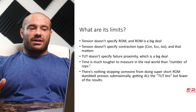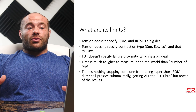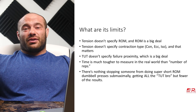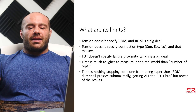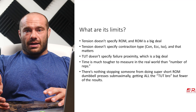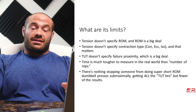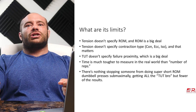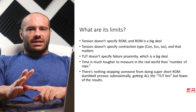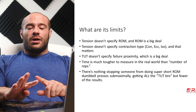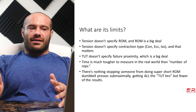The second point is that tension doesn't specify contraction type — concentric, eccentric, or isometric. Isometric only really kind of sucks for growth. And range of motion matters: the best growth comes from going all the way down and all the way up. Someone could say 'time under tension is great' and then do these little half reps — and all of a sudden it's not that great. Or if they only do concentrics, lifting up and throwing the weight down, they're missing the eccentric contraction, which is super critical to maximizing growth.